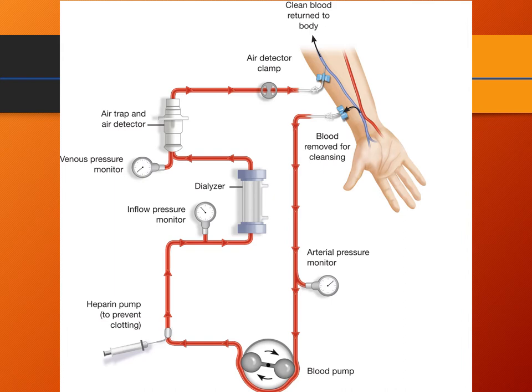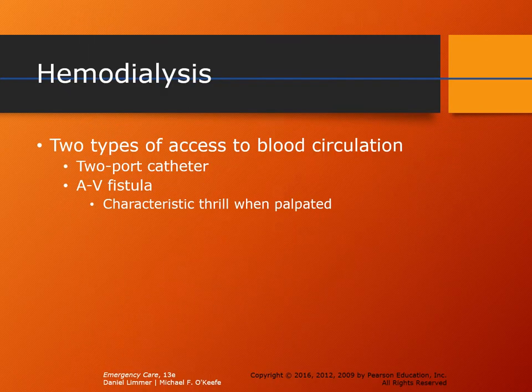After the dialyzer, blood runs through the rest of the line to a venous pressure monitor, then through an air trap and air detector. The air detector is close to the patient because pumping blood with air bubbles can cause very negative reactions and serious complications. If the machine detects air in the line, it shuts down and alarms. Finally, the cleaned blood travels back into the patient's bloodstream.